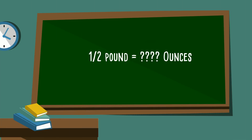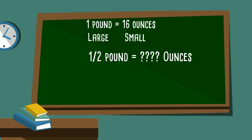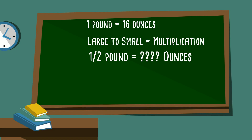How about this one: one half pound equals how many ounces? The hint is 1 pound equals 16 ounces. We know that pounds are larger than ounces, so we go from a larger unit to a smaller unit — we multiply. We multiply the fraction one half by 16 over 1. Multiplying straight across: 1 times 16 equals 16, and 2 times 1 equals 2. Divide 16 by 2, and that gives us 8 ounces.